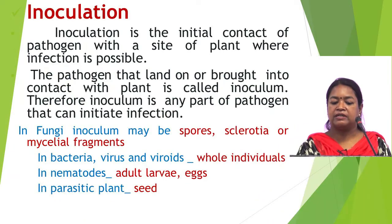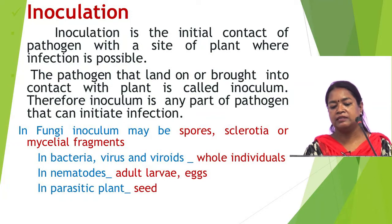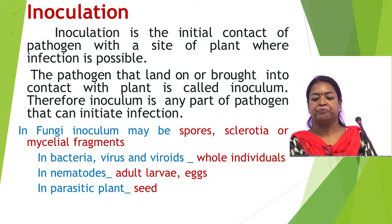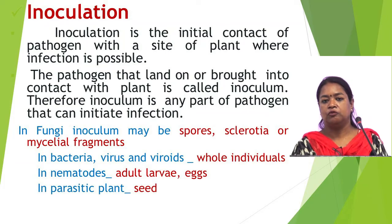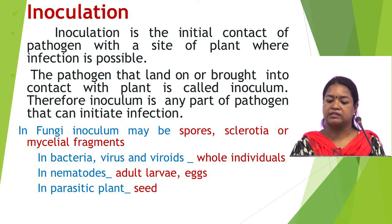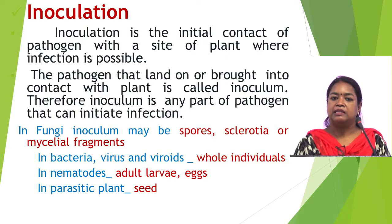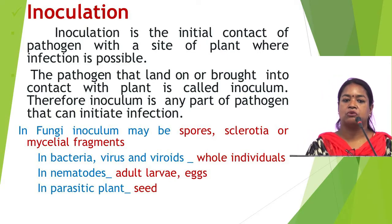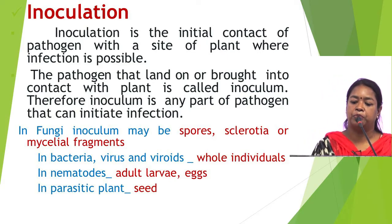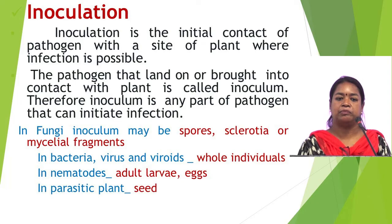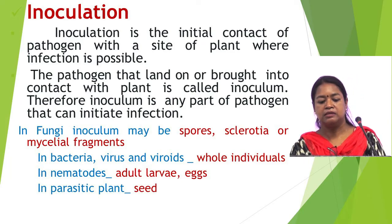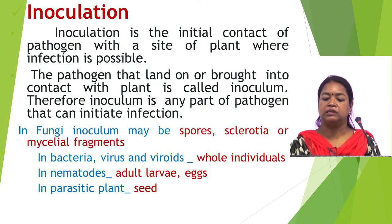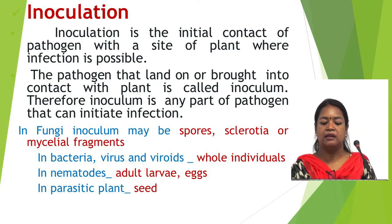The first event is inoculation. Inoculation is the initial contact of the pathogen with a site of the plant where infection is possible. The pathogen that lands on or is brought into contact with the plant is called inoculum. Therefore, inoculum is any part of the pathogen that can cause infection.